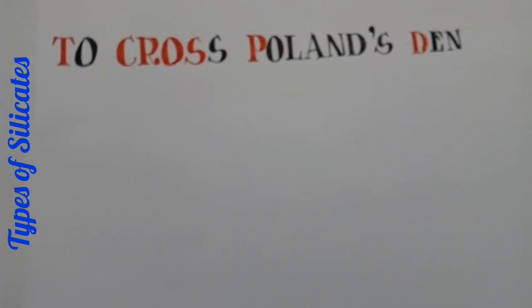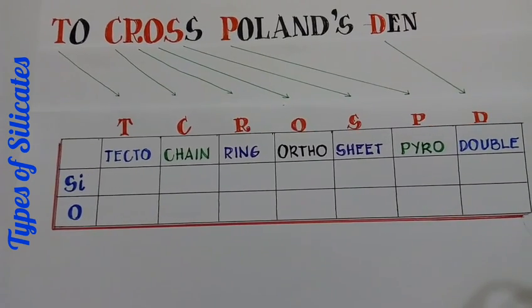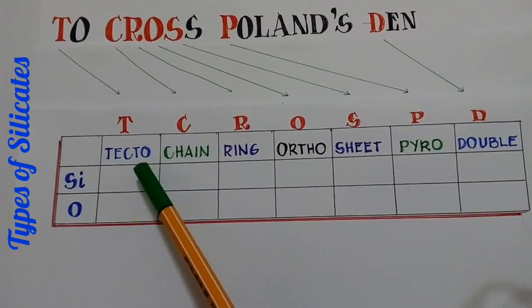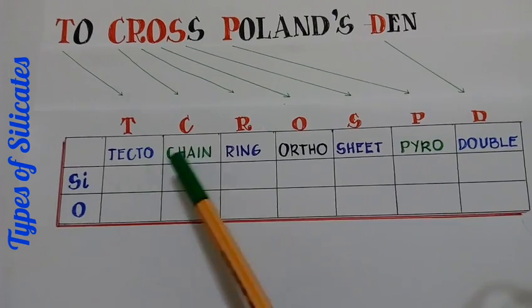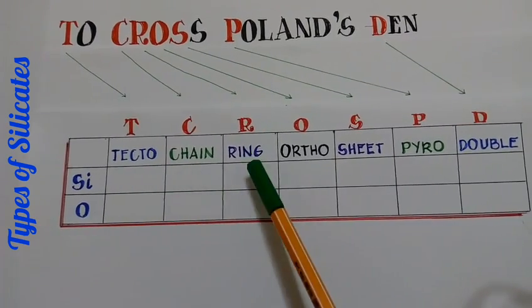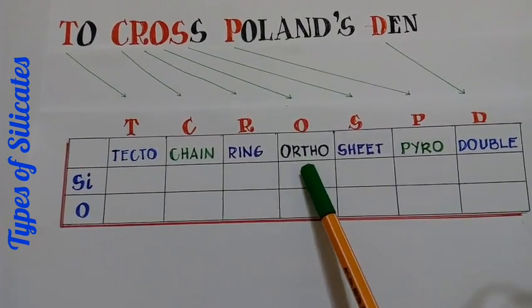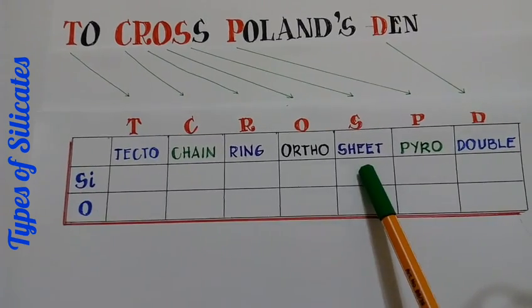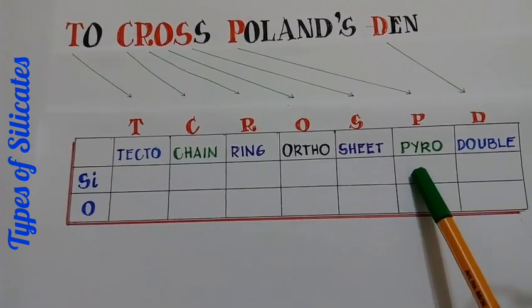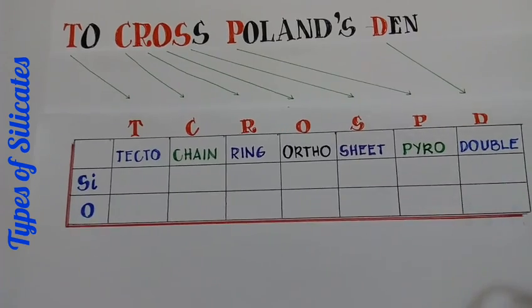From the sentence you get tectosilicate, chain silicate, ring silicate, orthosilicate, sheet silicate, pyrosilicate, and double silicate.